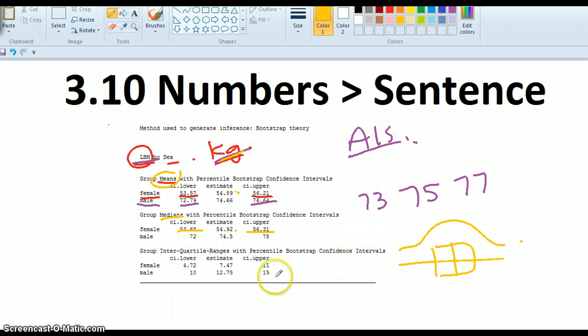Interquartile range. The interquartile range for the females is somewhere between 4.7 and 11 kg. And the interquartile range for males is somewhere between 10 and 15 kg. So which is more spread out? The males.